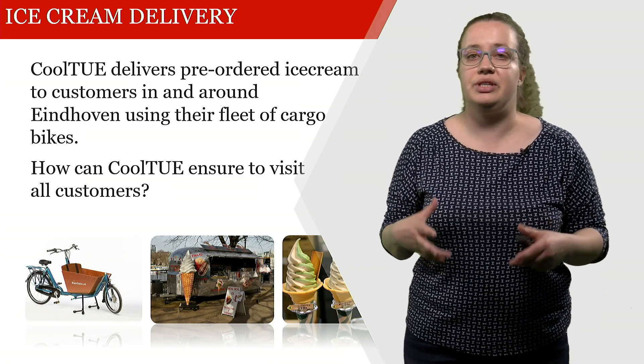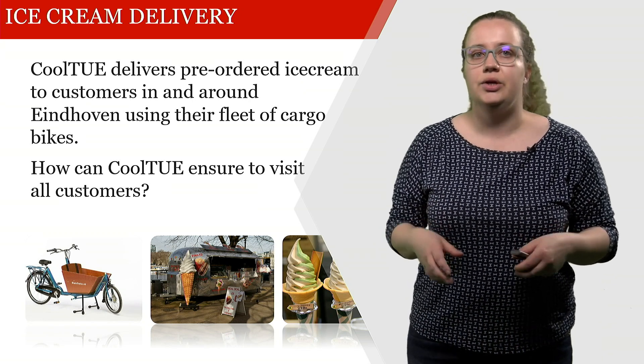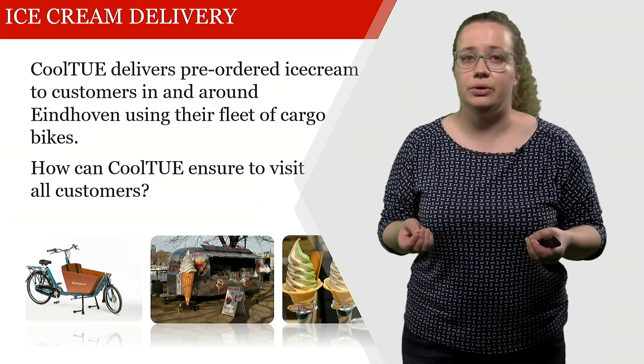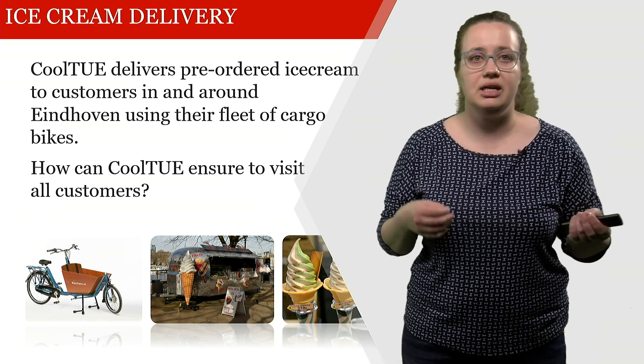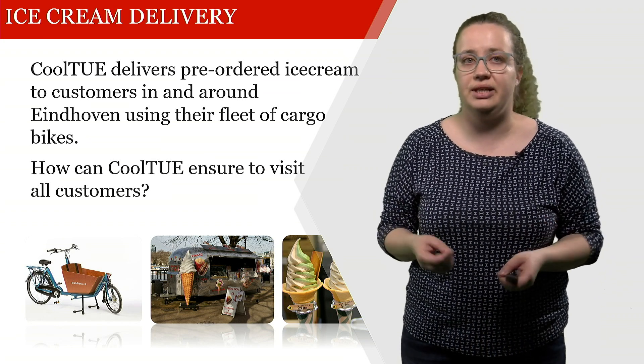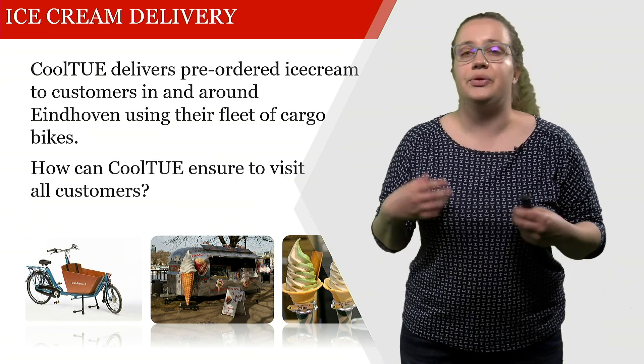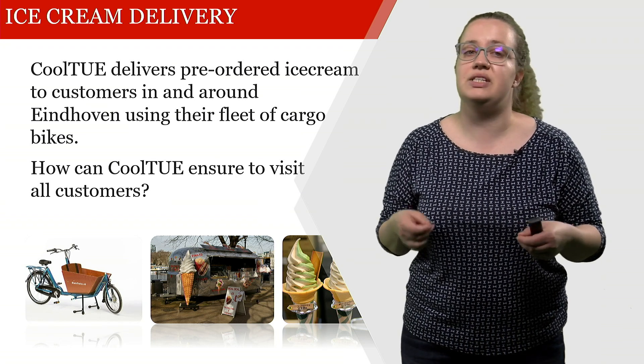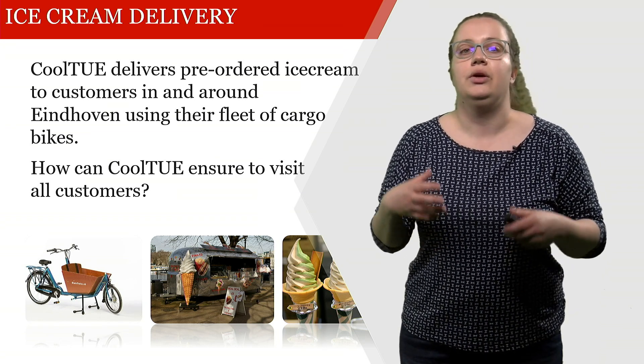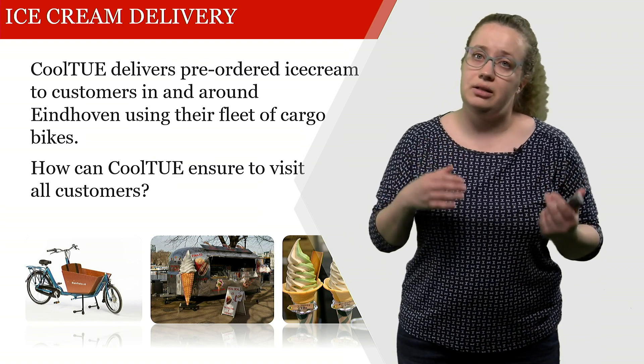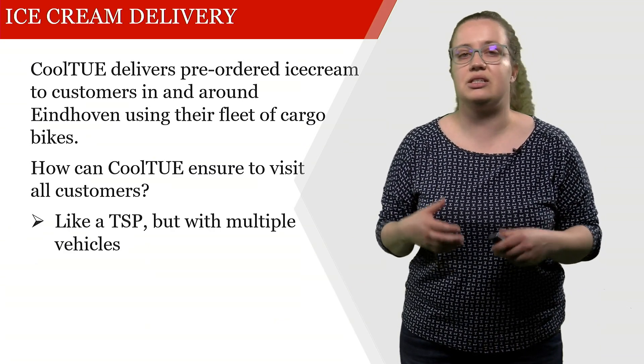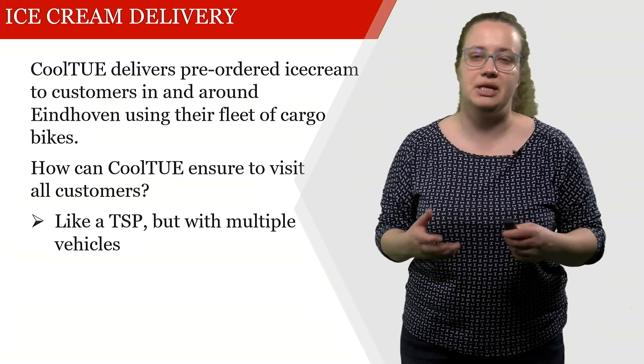Let's look back into the example that we've been using. CoolTOE delivers pre-ordered ice cream to customers in and around Eindhoven using their fleet of cargo bikes. The question is, how can CoolTOE ensure to visit all customers? So not only using one vehicle, but multiple vehicles. This is extremely similar to the TSP, but has multiple vehicles.